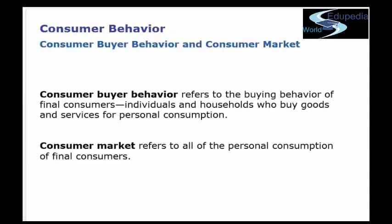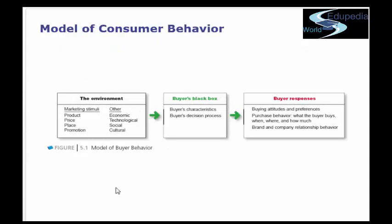Starting with the first model: consumer buyer behavior refers to the buying behavior of final consumers — individuals and households who buy goods and services for personal consumption. The consumer market refers to all personal consumption of final consumers, meaning whatever final consumers are purchasing or want to purchase.